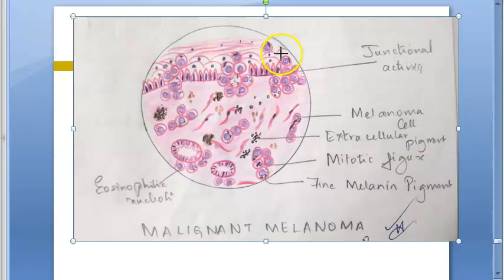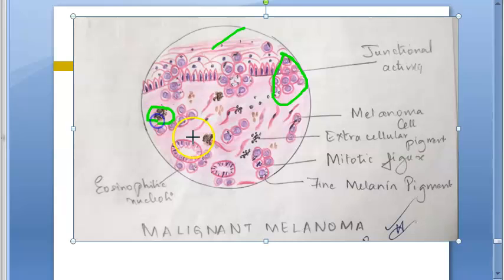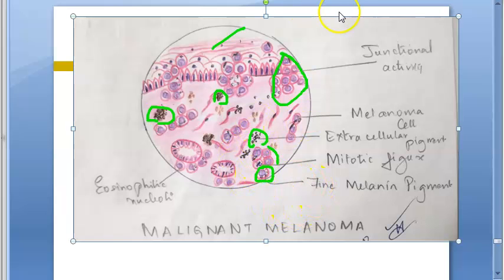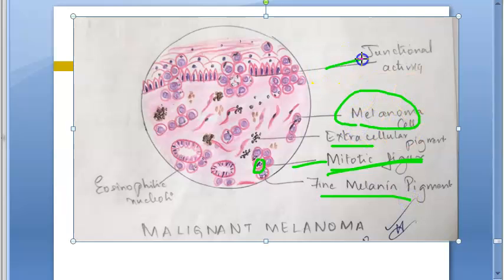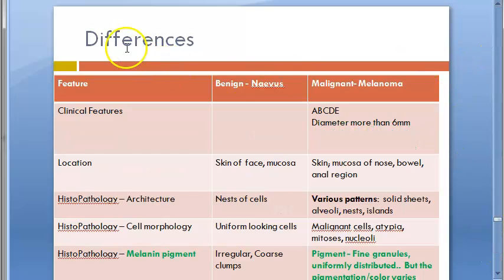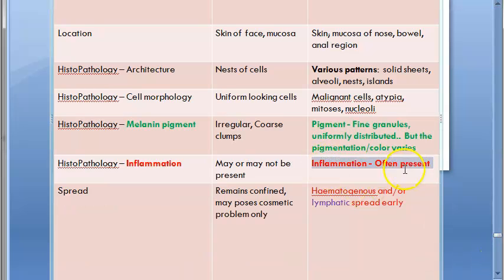In the diagram you can see a lot of melanocytes, what appears to be keratin, and extracellular pigment — black deposits outside the cells. There is also fine melanin pigment inside the cells, mitotic figures, and inflammation. Mitotic figures are typical findings in any malignancy. Junctional activity is clearly visible in this malignant melanoma diagram.